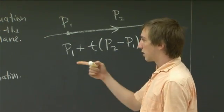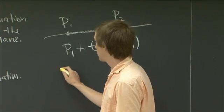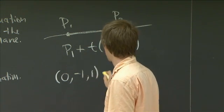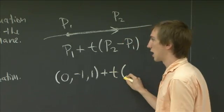So in our specific problem here, we have P1 we can take to be the first point, 0, minus 1, 1. And then we have T times...